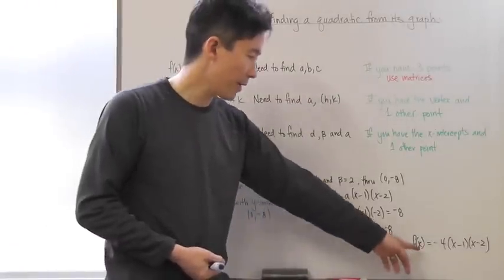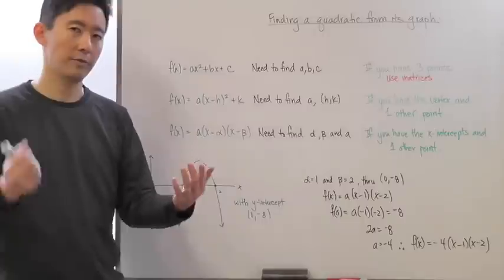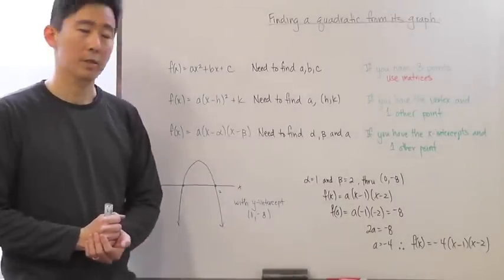And so, I know that f(x) now is going to be equal to negative 4 times (x - 1)(x - 2). And you've determined the function of the quadratic from its graph.